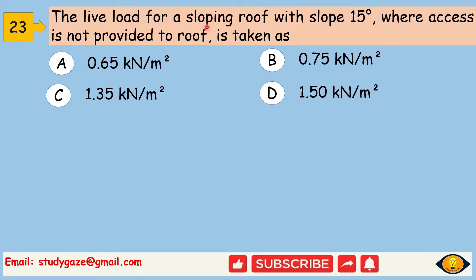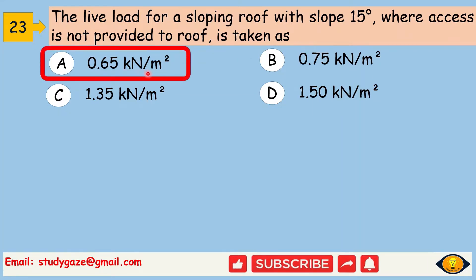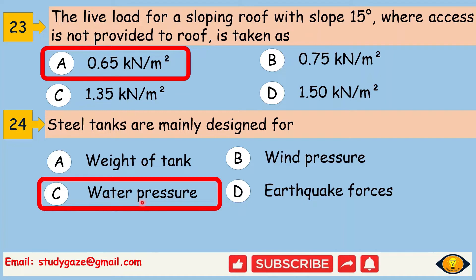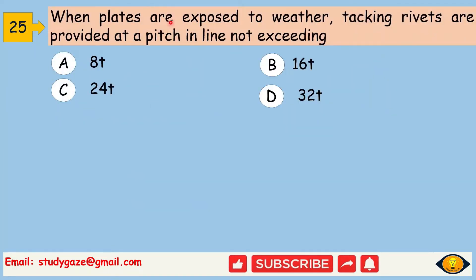The live load for a sloping roof with slope 15 degrees where access is not provided to roof is taken as 0.65 kN/m². Next, steel tanks are mainly designed for water pressure. Next, when plates are exposed to weather, tacking rivets are provided at a pitch in line not exceeding 16T.